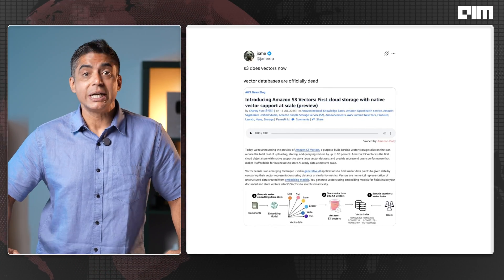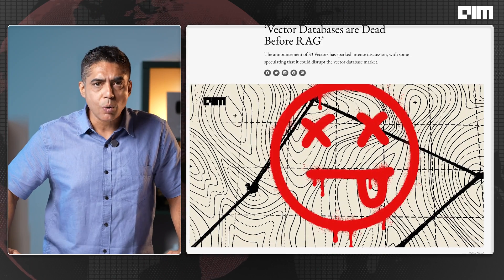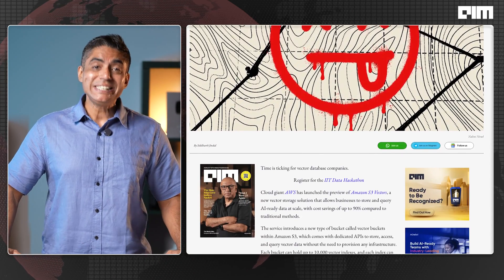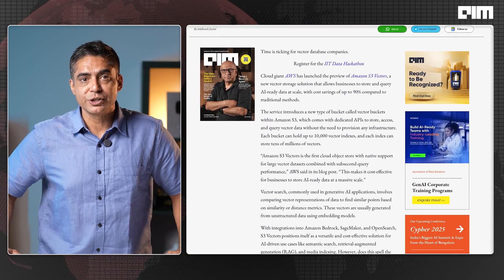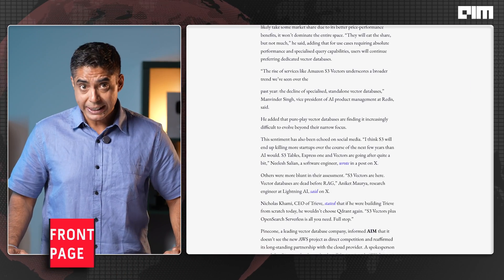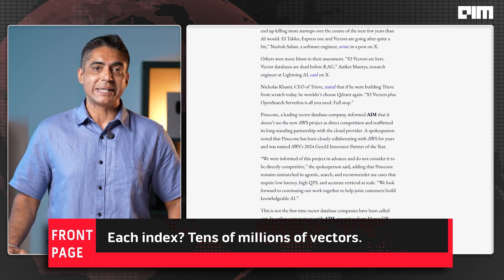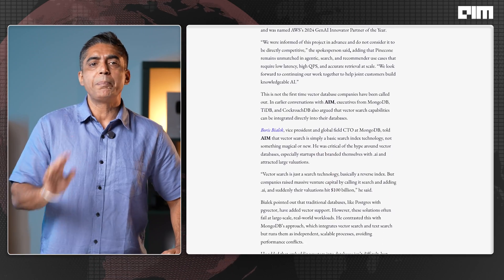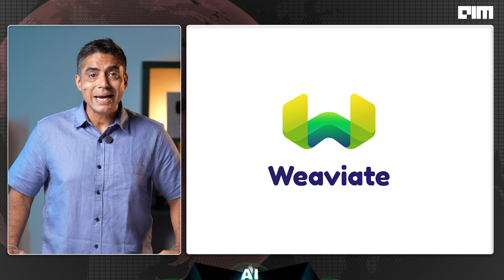No extra infrastructure, no vector database setup, and 90% cheaper than traditional methods. Each vector bucket can hold about 10,000 indexes, each index tens of millions of vectors. So what happens to Pinecone, Weaviate, and Quadrant now?